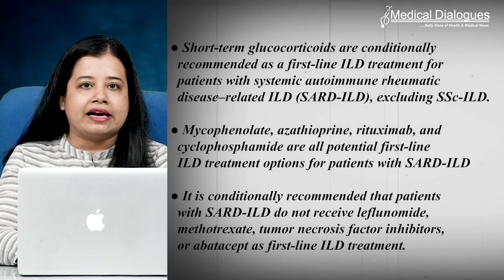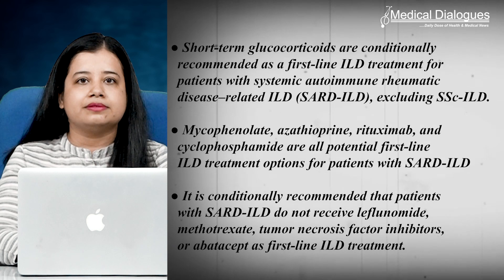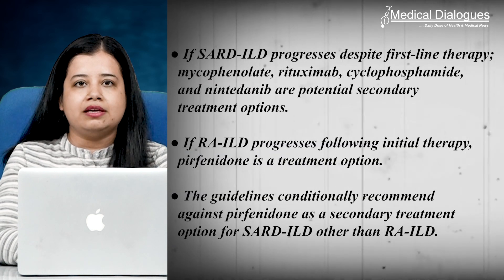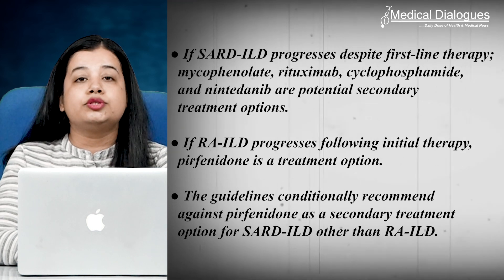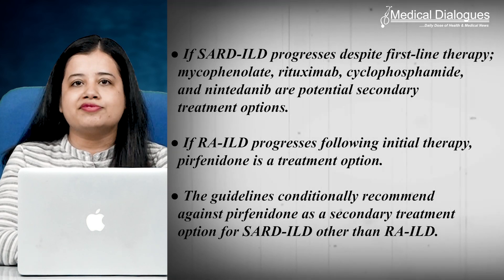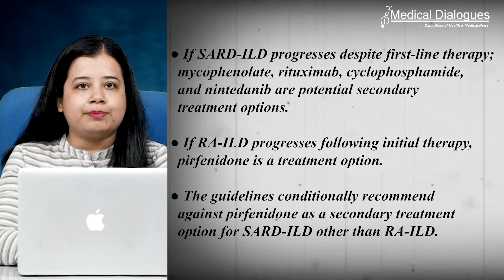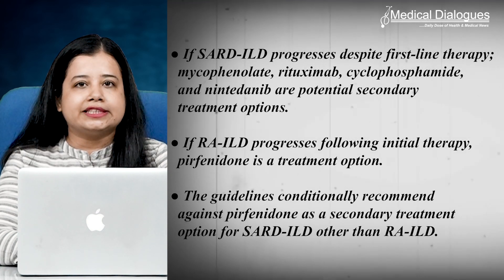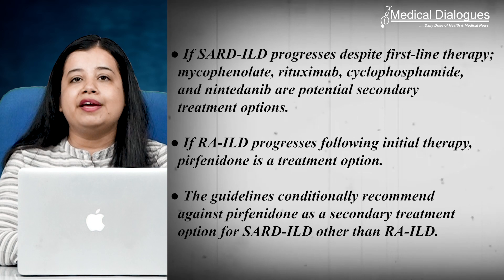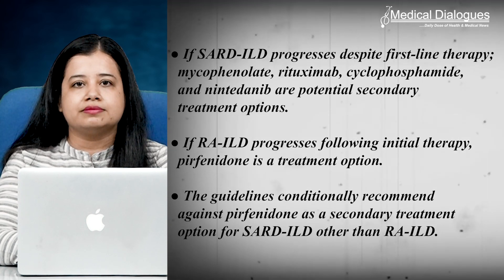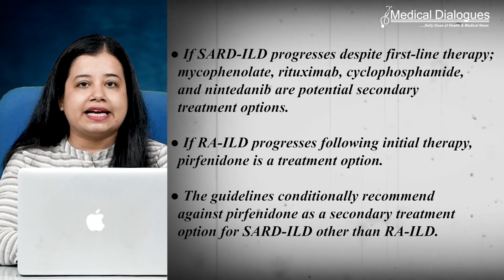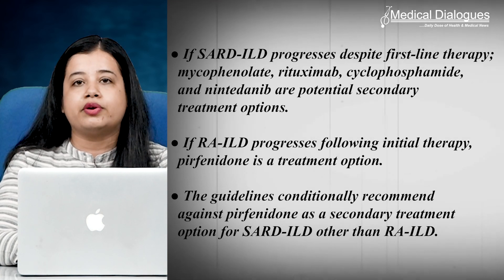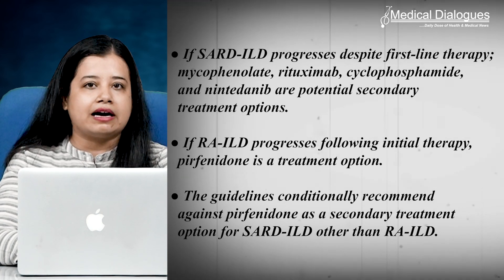If SARD-ILD progresses despite first-line therapy, mycophenolate, rituximab, cyclophosphamide, and nintedanib are potential secondary treatment options. If RA-ILD progresses following initial therapy, pirfenidone is a treatment option. The guidelines conditionally recommend against pirfenidone as a secondary treatment option for SARD-ILD other than RA-ILD.